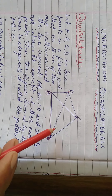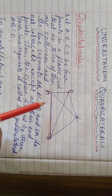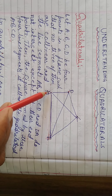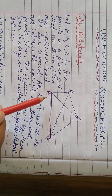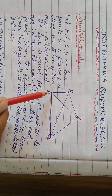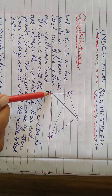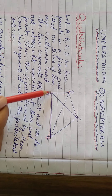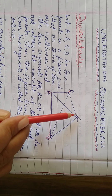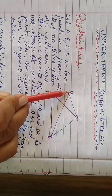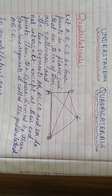So in the quadrilateral, how many diagonals? Two diagonals and four vertices. Four vertices A, B, C, D are called vertices.